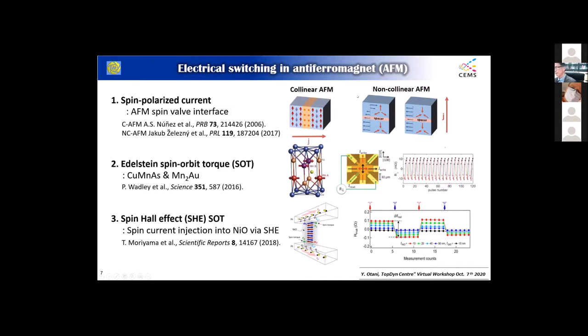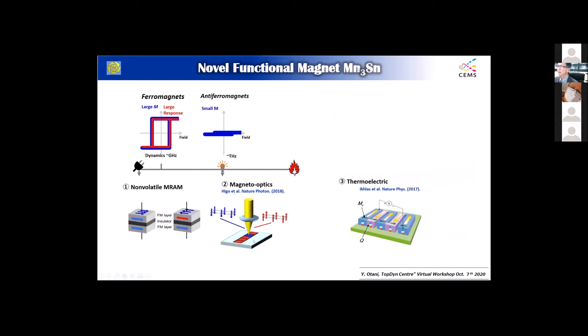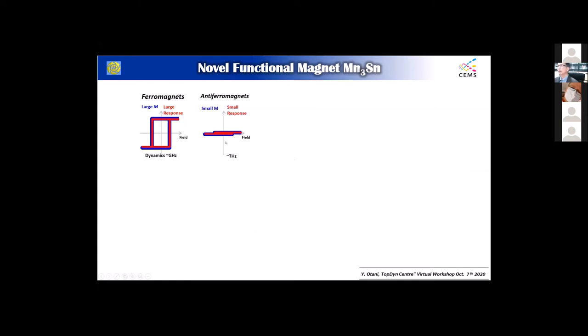Now I'd like to show how good manganese-3-tin is compared with ferromagnets and other collinear antiferromagnets. In the case of ferromagnet, we have large magnetization giving large responses — for example, spin polarization, magneto-optics, and anomalous Hall effect. But in the case of normal collinear antiferromagnet, magnetization is nearly fully compensated, giving a small response. That's why we don't have so much response there.